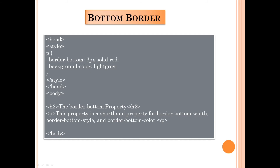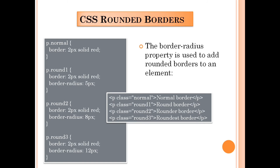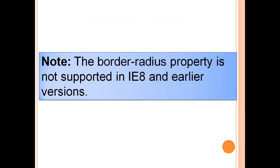Next, CSS rounded borders. The border-radius property is used to add rounded corners to an element. We have four types: normal border, rounded border, rounder border, and roundest border. This is the example for the CSS rounded border — you can try it yourself or wait for my notepad explanation.